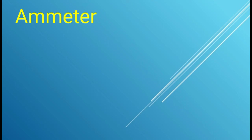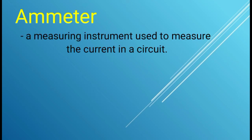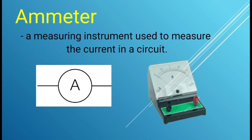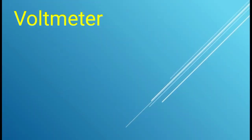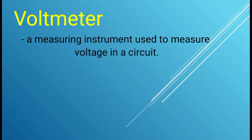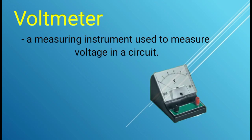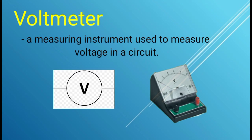Next, we have the ammeter. It is a measuring instrument used to measure the current in a circuit. So, this is the example of an ammeter and its symbol. While the voltmeter is an instrument used to measure the voltage in a circuit. And this is the example of the voltmeter and the symbol.